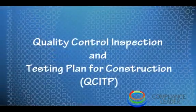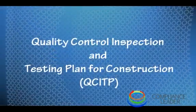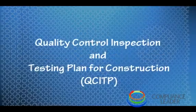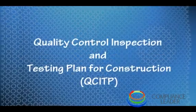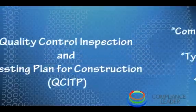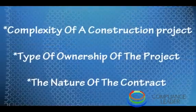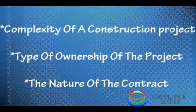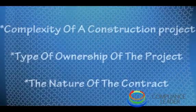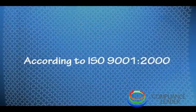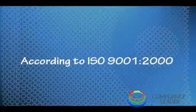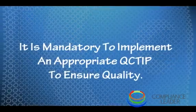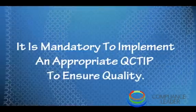Quality Control Inspection and Testing Plan for Construction — why do we need them? The type of QCITP adopted will depend on the complexity of a construction project, the type of ownership of the project, and the nature of the contract. According to ISO 9001 from year 2000, it is mandatory to implement an appropriate QCITP to ensure quality.